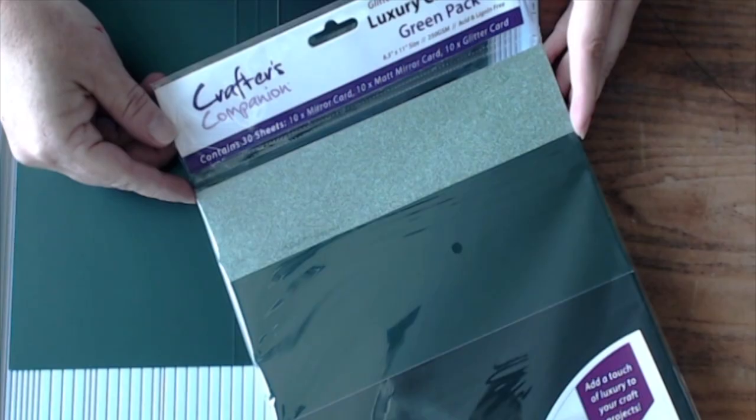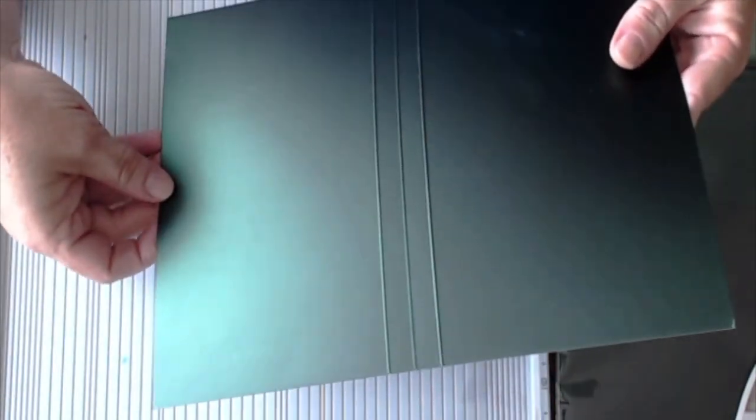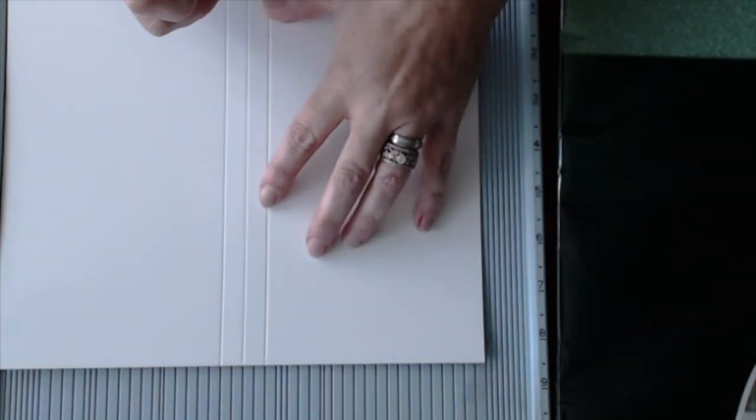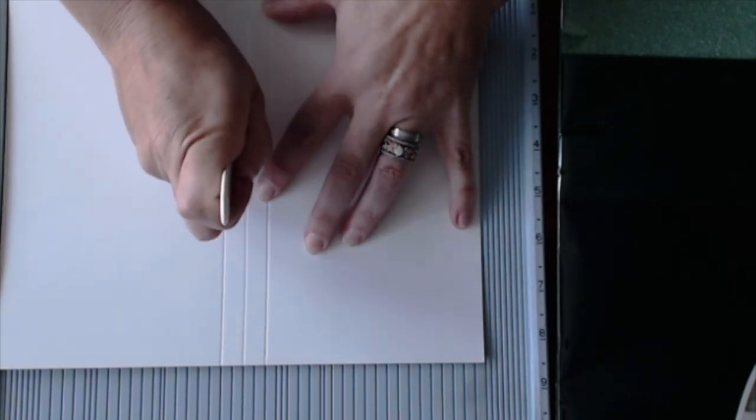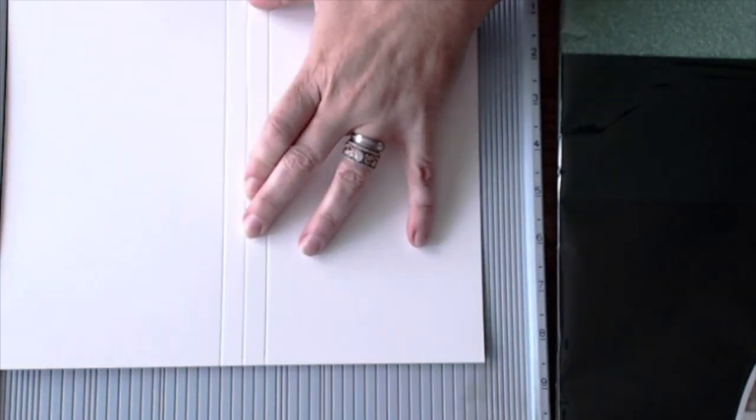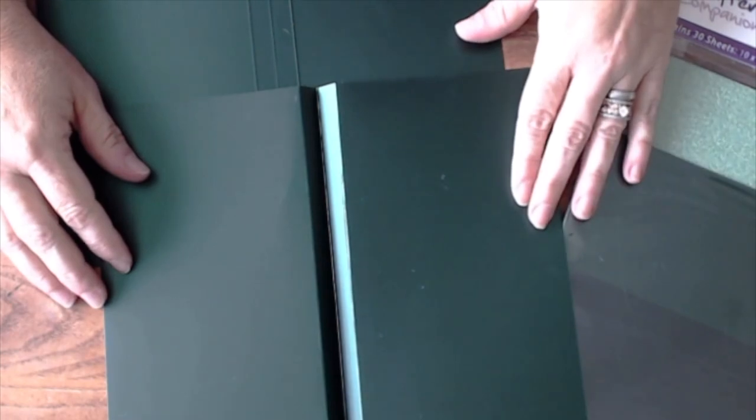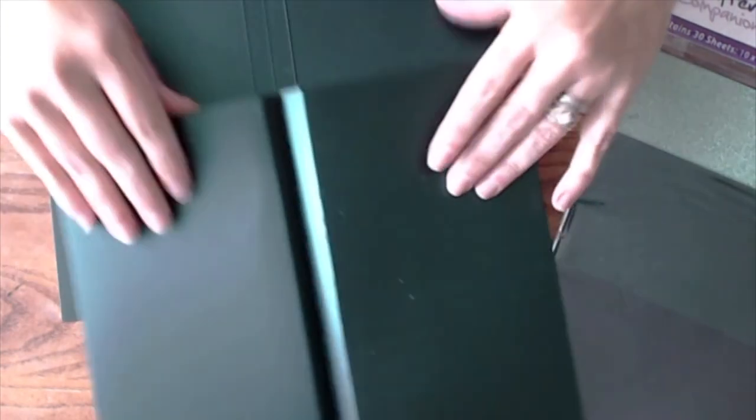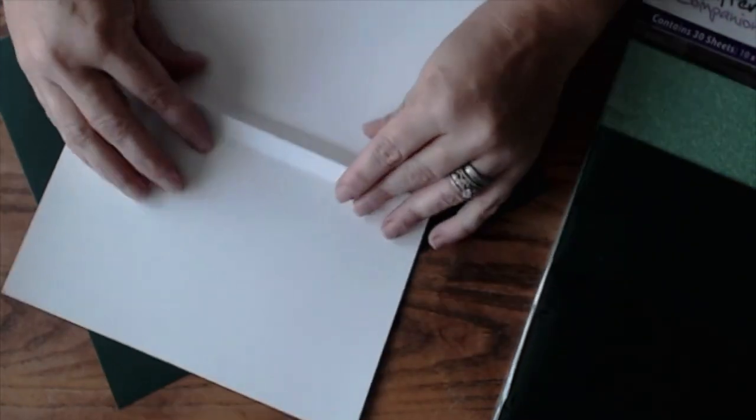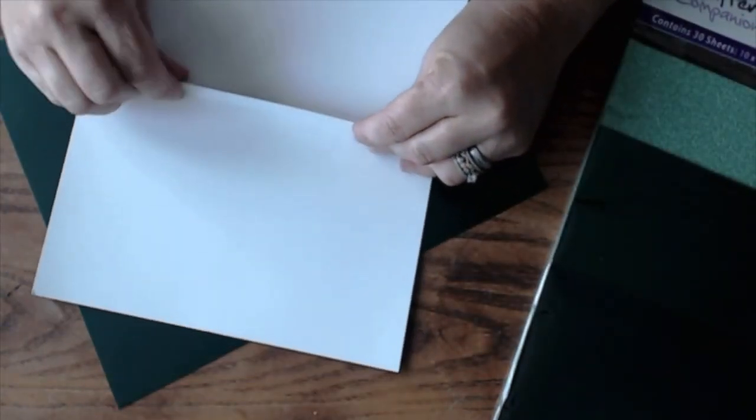Begin by placing an 8 1⁄2 by 11 piece of the matte mirror green cardstock onto the scoring board. Score a line in the center of the paper and then score a half inch on either side of the center. Do this on a total of two pieces. Use the scoring tool to ensure that each fold line is sharp. Fold one sheet so the center fold is a valley fold and another as a mountain fold.